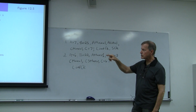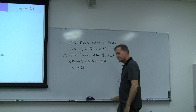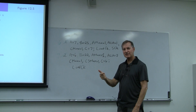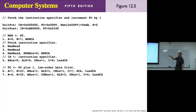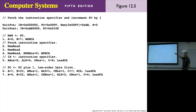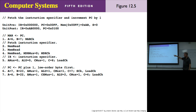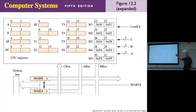Cycles one through five were the fetch, and six and seven are the increment. Let's review the fetch cycle. Recall A equals 6, B equals 7, MAR clock — the program counter is at register addresses 6 and 7. That puts the program counter into the memory address register, because the MAR is connected to the address lines on main memory.